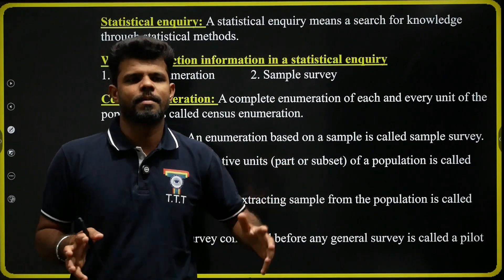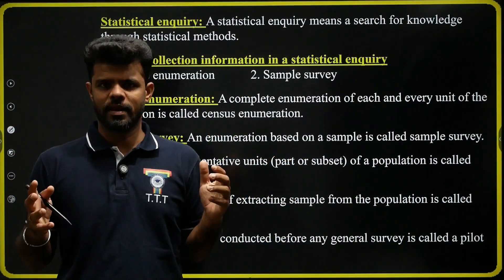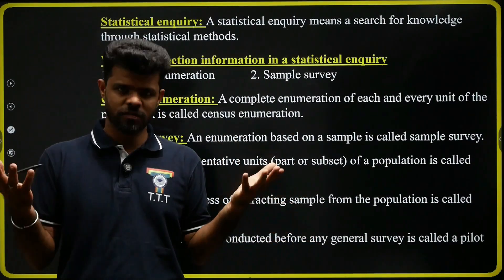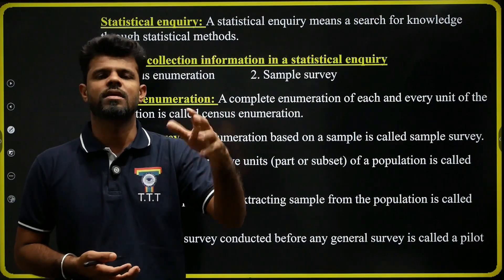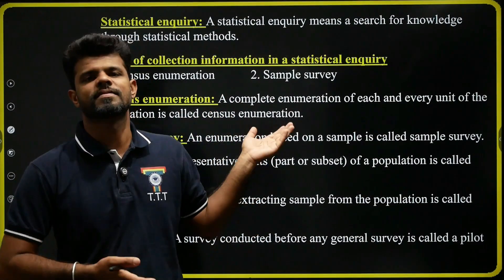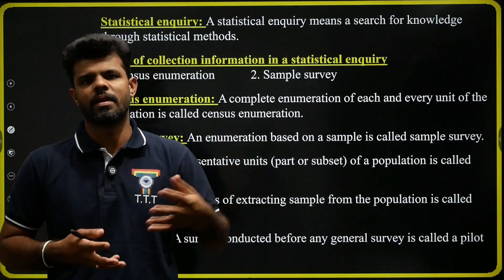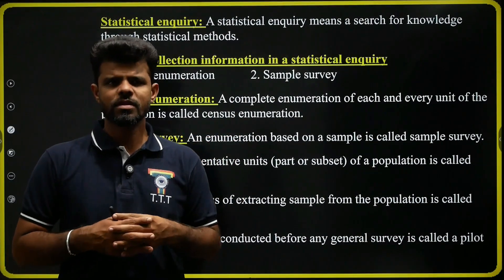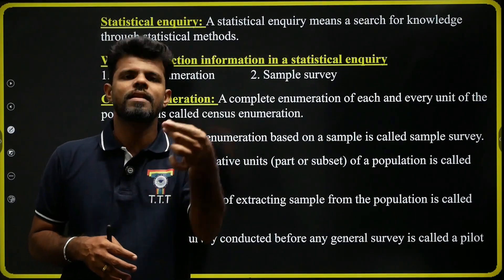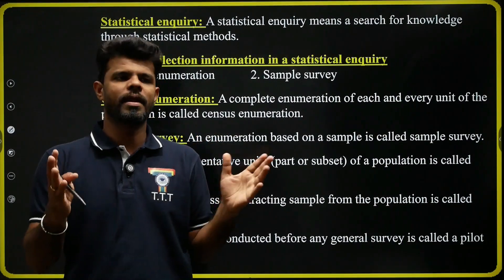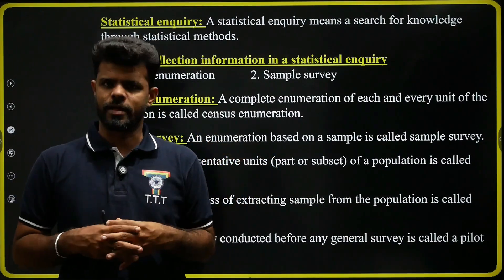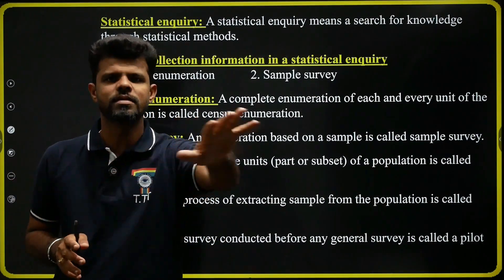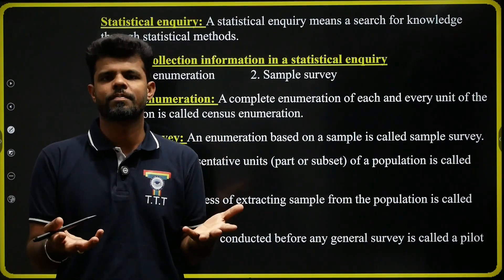What are some examples of statistical inquiry? For example, the total number of students in a college is also called a statistical inquiry. The total number of people in a particular city is also called a statistical inquiry — that is, a search for knowledge or search for truth based on statistical methods. Each and every student's information in a particular class is also one type of statistical inquiry.